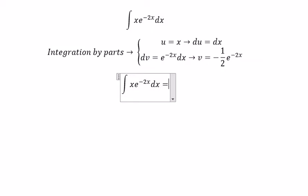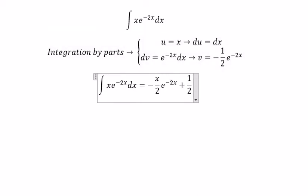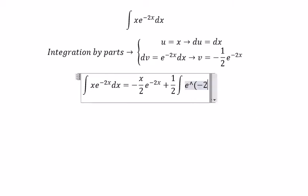In this one, we have u multiplied by v. Next, because we have a negative here, we get positive 1 over 2 times the integral of e to the power of negative 2x.